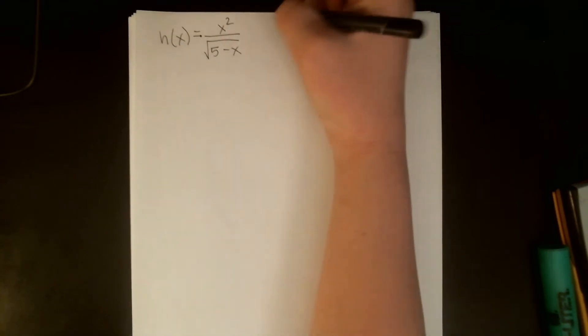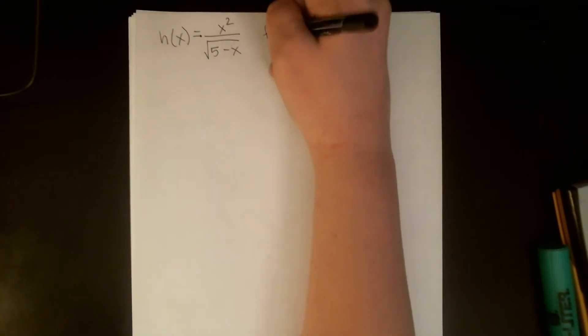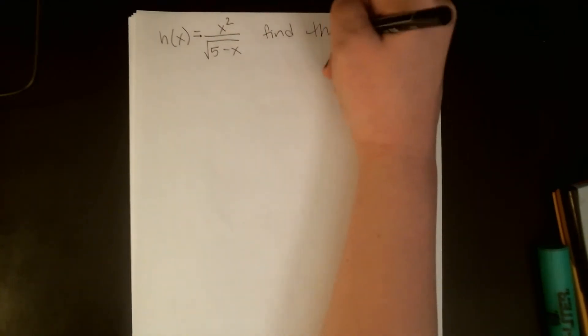Okay, so let's see. What are we up to? H. My pen lost this. End. Okay, so if h of x is equal to x squared over the square root of 5 minus x, and we want to find the domain.